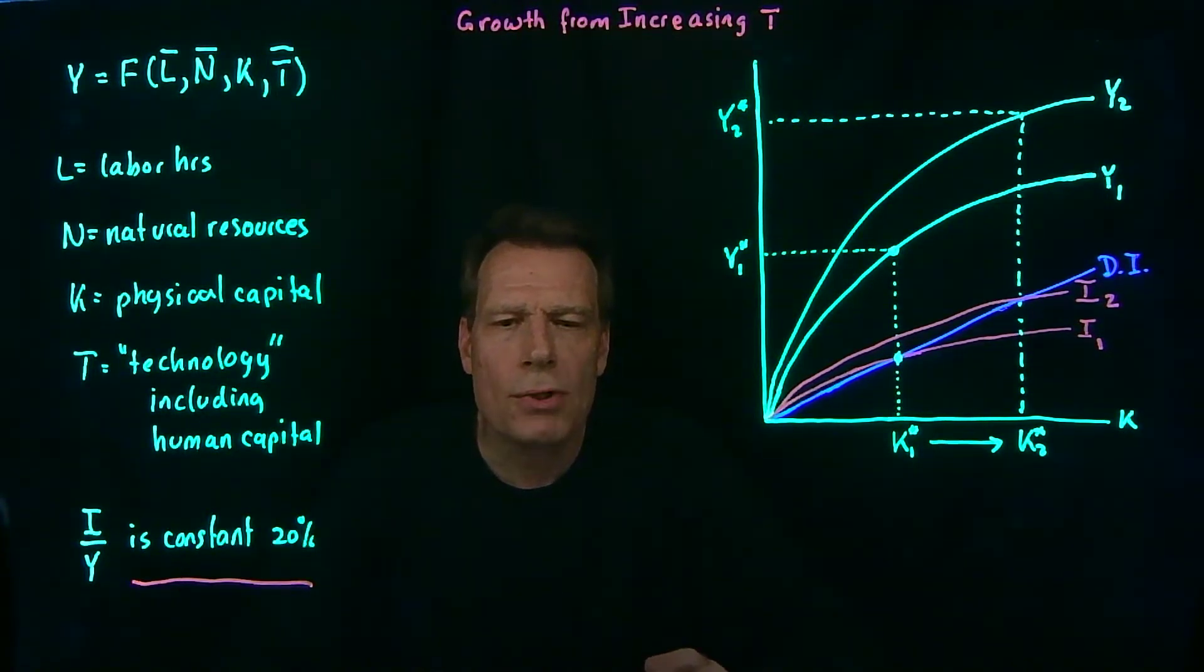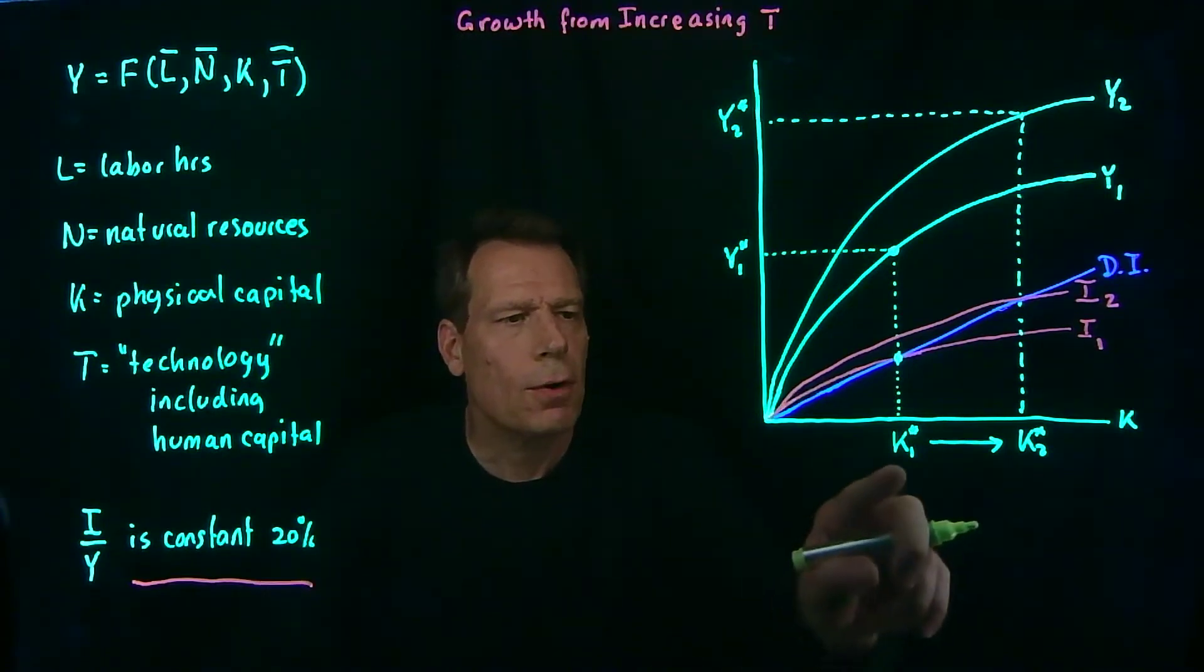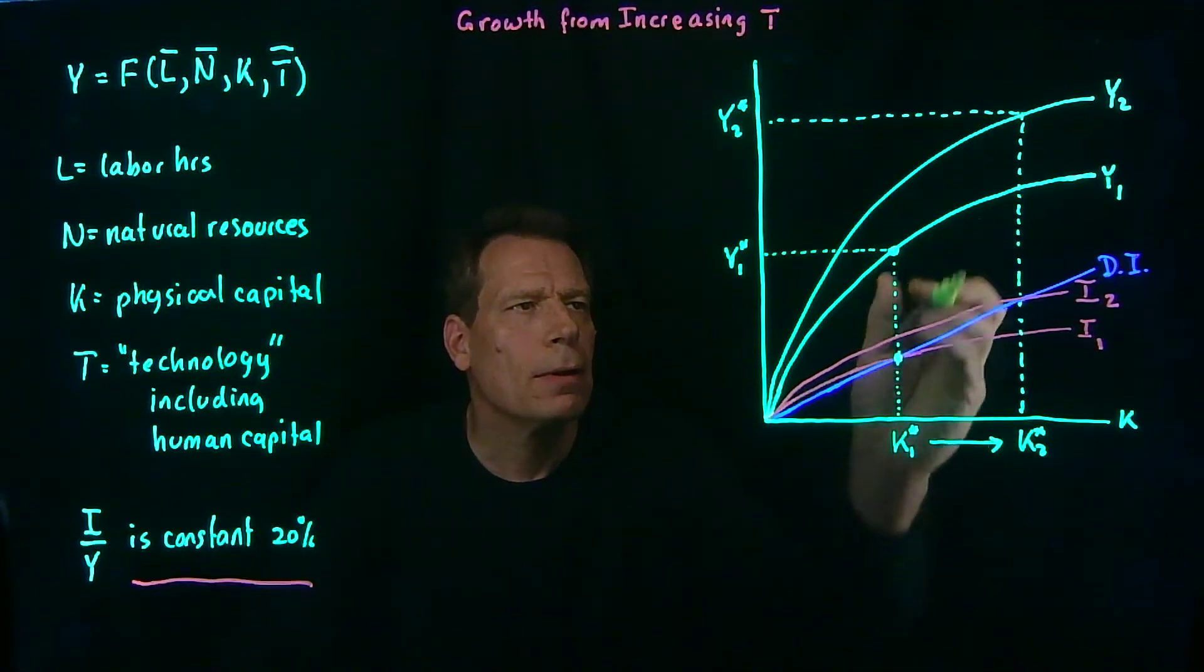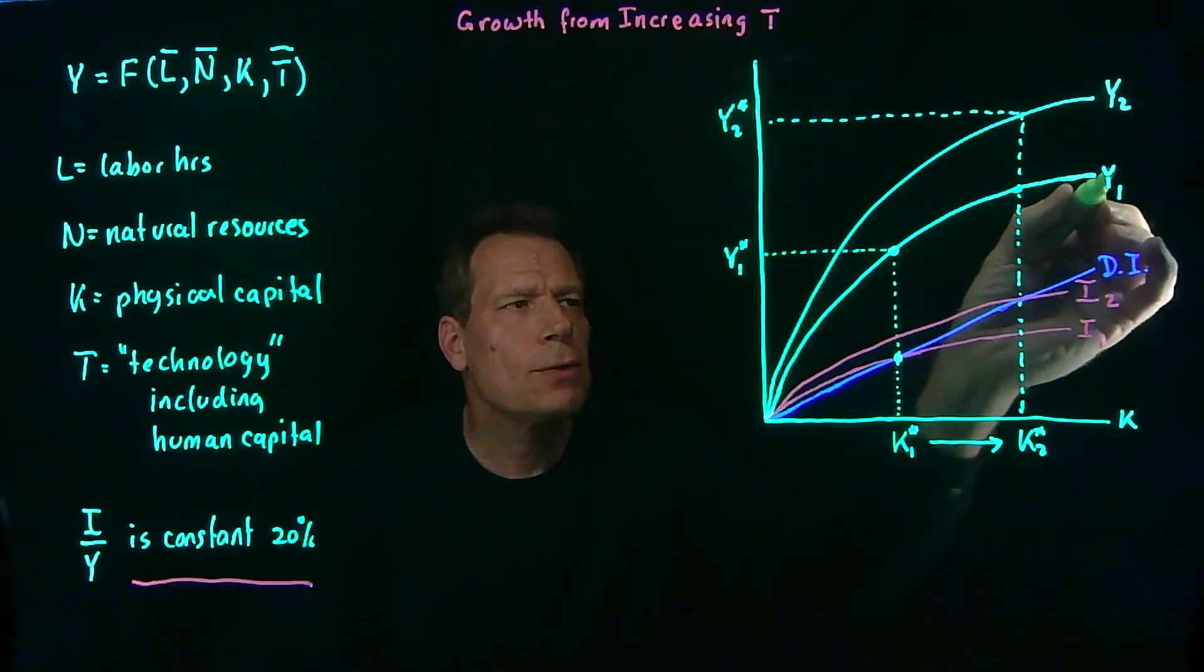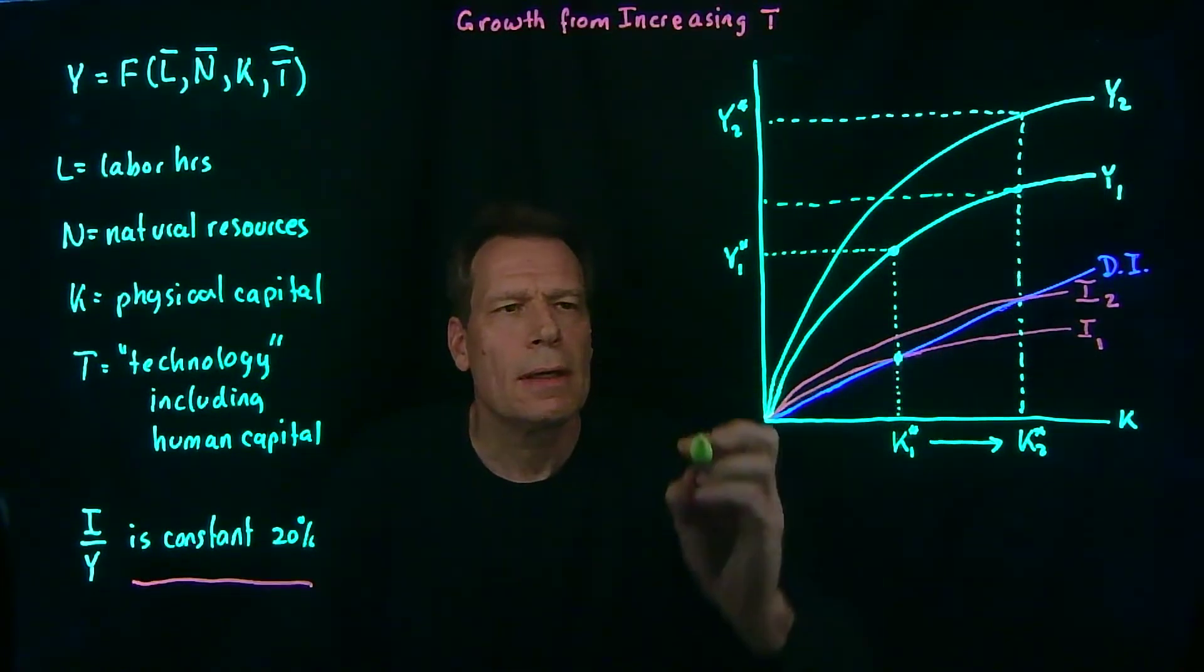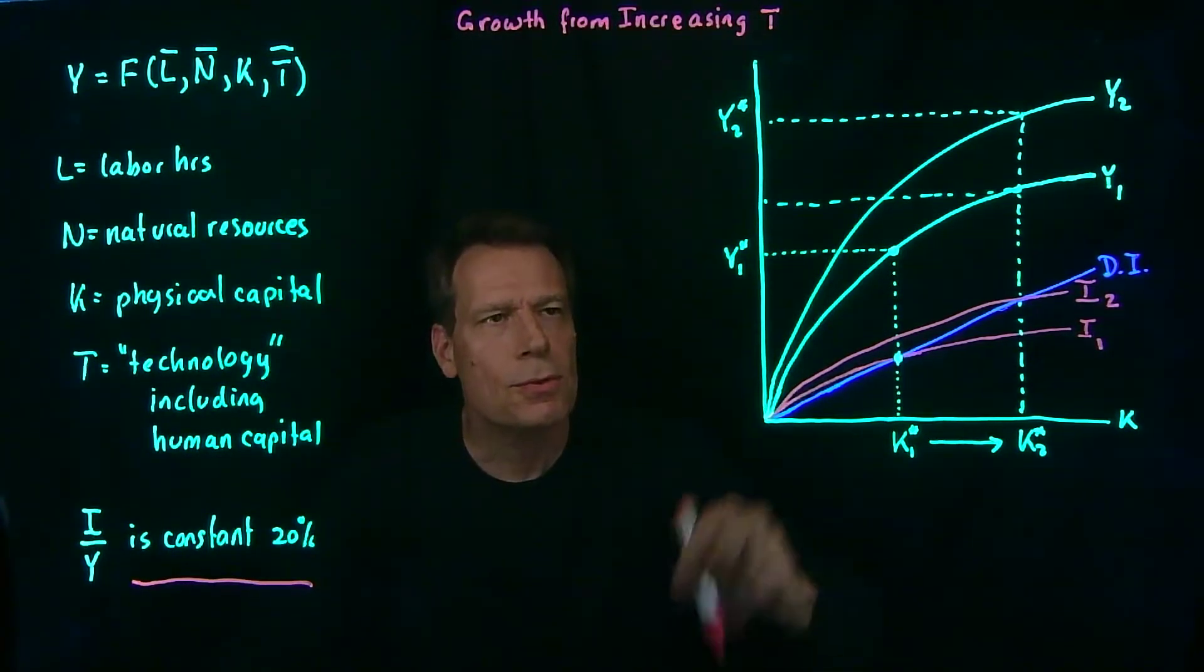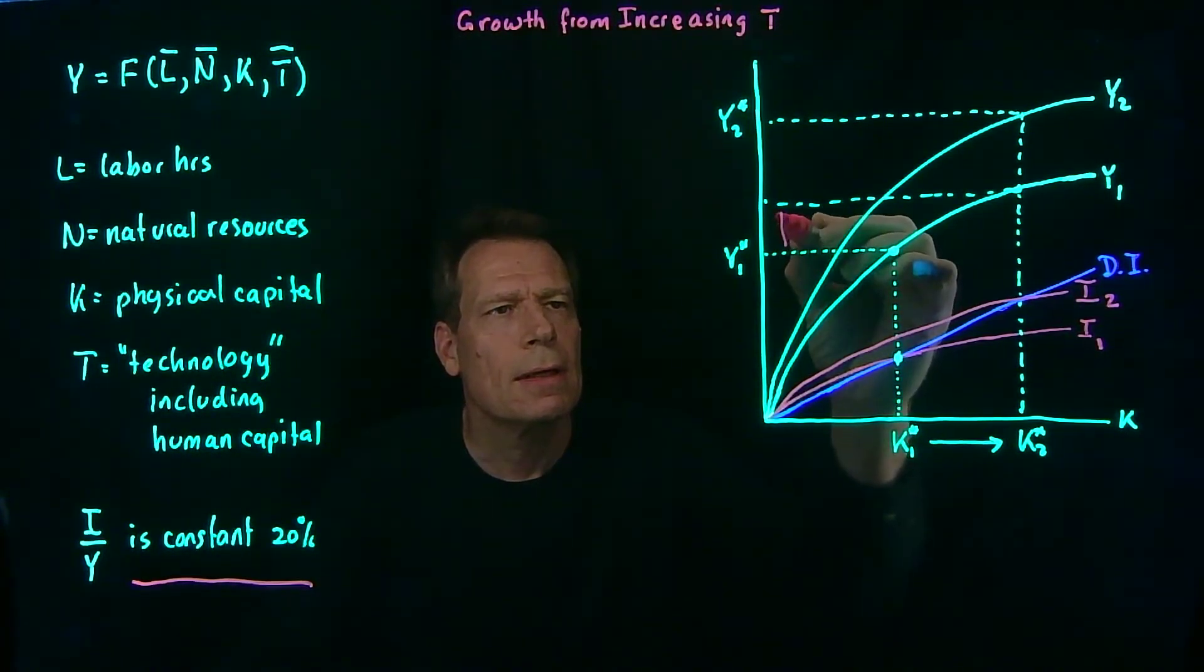Now, we could decompose that increase in GDP into two components. We could say, which portion of it is due to the increase in capital? If all that happened was an increase in capital, but we remained on the original GDP curve, we would see an increase in GDP of this amount. So that's just due to an increase in capital.